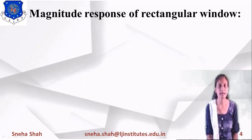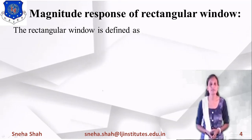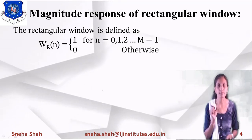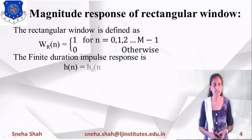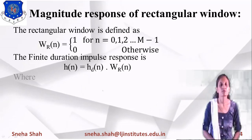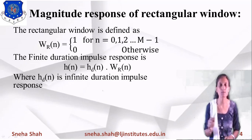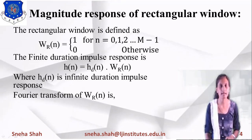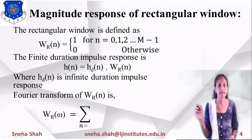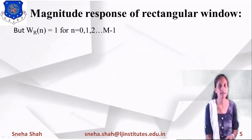Using this equation we can derive the magnitude response of the rectangular window. The rectangular window function W_R(n) equals 1 for the range 0 to M-1, and 0 otherwise. The finite duration impulse response is H(n) = h_d(n) × W_R(n), where h_d(n) is the infinite duration sequence. Taking the Fourier transform of W_R(n): W_R(ω) = Σ from n=0 to M-1 of W_R(n) · e^{-jωn}. Since W_R(n) = 1 in this range, this becomes Σ e^{-jωn}.